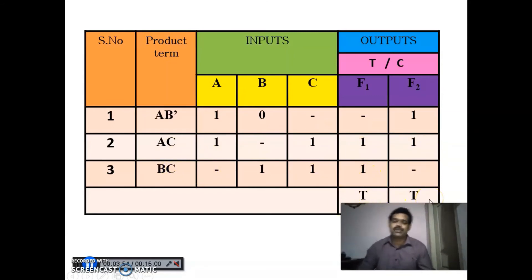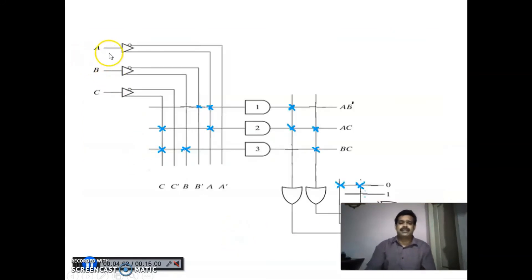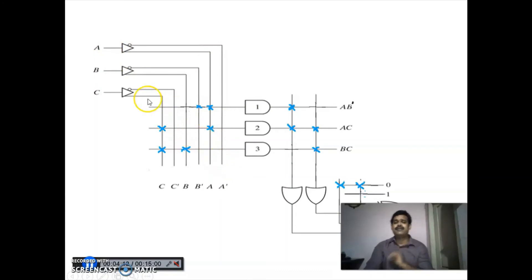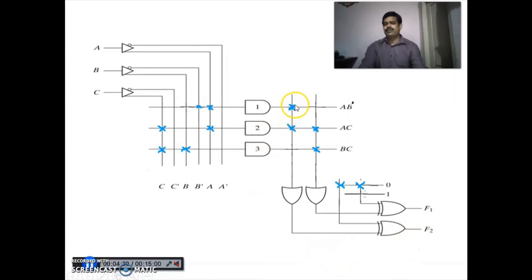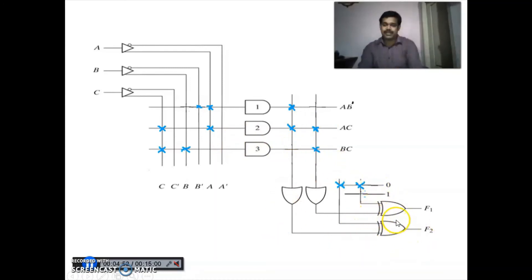For BC: dash for A, 1 for B, 1 for C. BC is present only in F1. Both F1 and F2 are in true form, so we put T for both. In the implementation, we have three inputs A, B, C with inverter buffer giving true and complement forms. We have three AND gates. AB-bar is programmed at A and B-bar; AC at A and C; BC at B and C. AB-bar is only in F2, AC in both F1 and F2, BC only in F1. Both are in true form so the XOR gate input is 0.